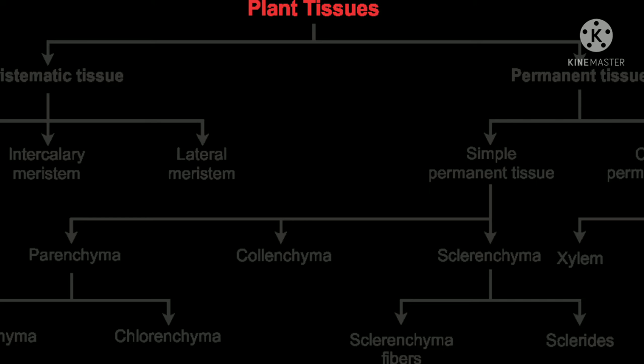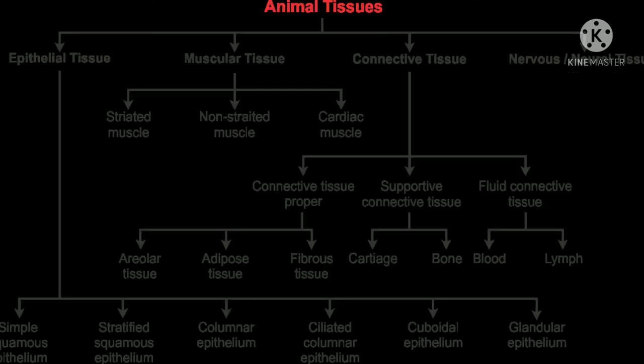Now, let's look at the classification of plant tissue. Plant tissue has been divided into two types: meristematic tissue and permanent tissue. Permanent tissue consists of cells that are incapable of cell division, while meristematic tissue consists of cells that are capable of cell division and totipotency.